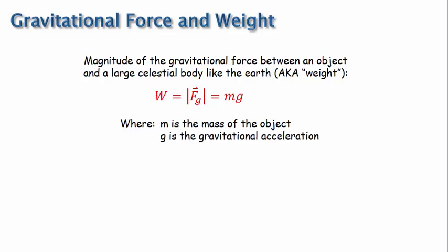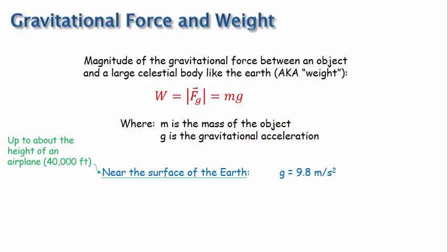The value of g depends on where the object is located. In most of our applications, the object will be near the surface of the Earth, and g will be 9.8 meters per second squared. We'll continue to define near the surface of the Earth as up to about the height of an airplane, which is around 40,000 feet or 12,000 meters.